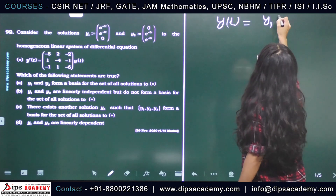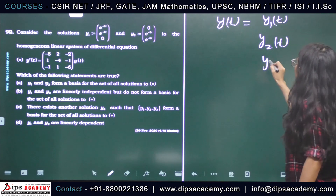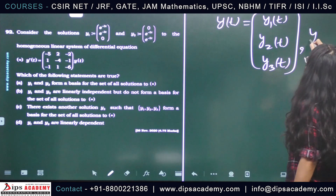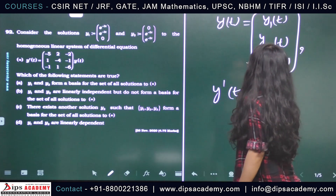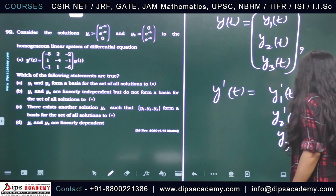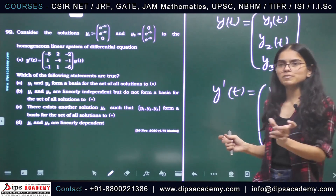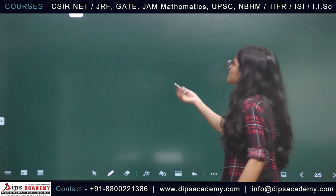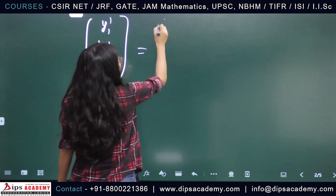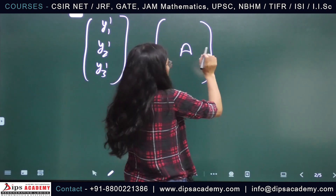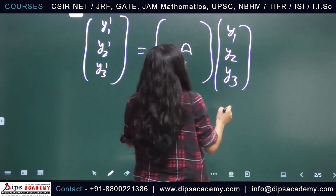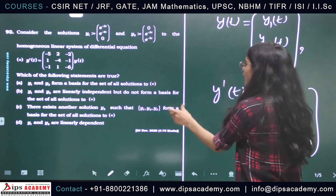We take y(t) as the column vector (y1(t), y2(t), y3(t))^T. Then y'(t) is the column vector (y1'(t), y2'(t), y3'(t))^T. We multiply the matrix A by the vector (y1, y2, y3)^T.